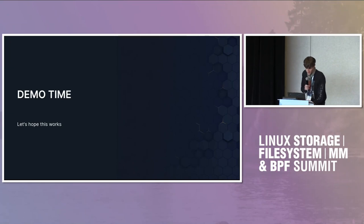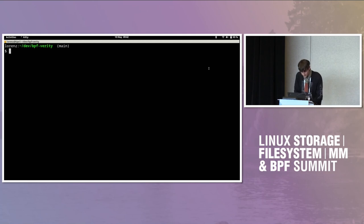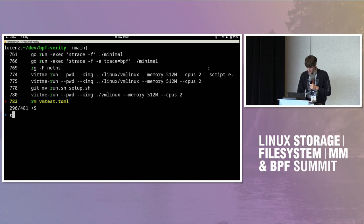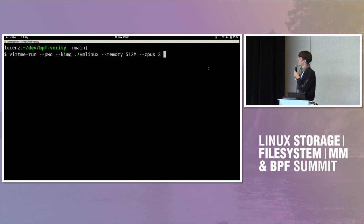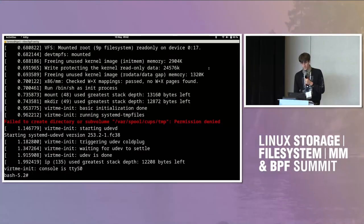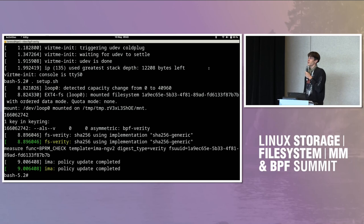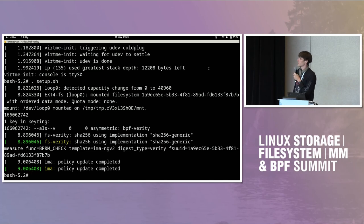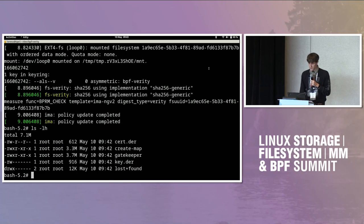I'm going to attempt a demo. The first thing I'll do is run a lightweight virtual machine with a patched kernel. I'll do a little bit of setup — some of this has to do with how FS Verity works, and some with how I built the proof-of-concept. You need an IMA policy to make it work. There's a certificate and a key you can read, a create-map program which is basically a placeholder for 'can I do a BPF syscall', and then the gatekeeper program.